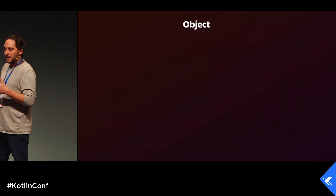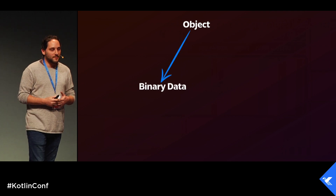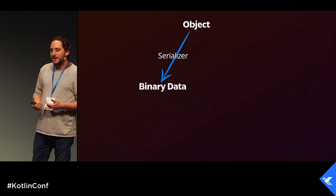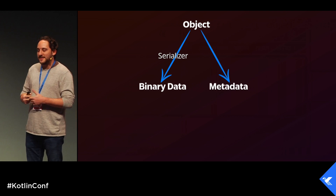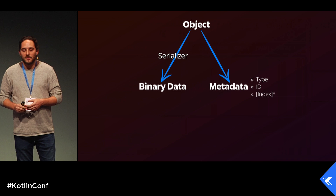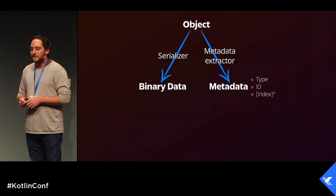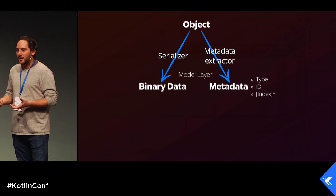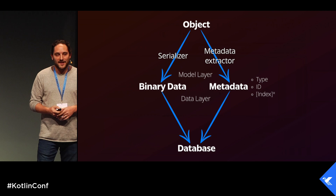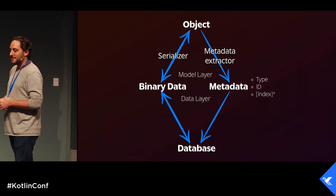How does an object get put into the database? First, the object is serialized into binary data — that's the role of the serializer. But the database also needs metadata: things like its type (which defines the collection it goes into), its ID (which is mandatory), and maybe one or more indices. That's the role of the metadata extractor — all handled by the model layer. Then everything — the binary data and the metadata — is put into the database via the data layer. You can get an object back by retrieving its binary data and deserializing it.